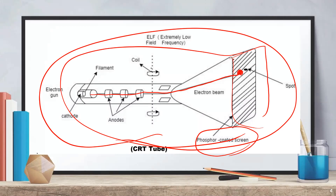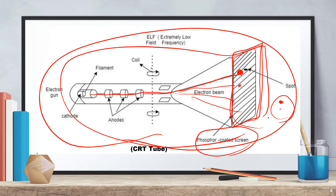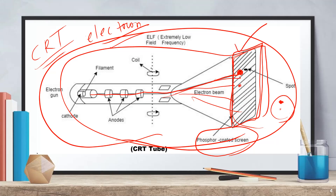The electrons touch a phosphor-coated screen. Wherever the electron touches the phosphor-coated screen, there will be light. That light combines to create the image we can see on the computer screen. The image is generated because the CRT tube uses an electron beam, which hits the phosphor-coated screen and causes light to be generated.